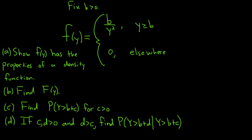In this problem we have a density function f of y and we have to answer various questions. Let's go through them one by one. Part A says to show that f of y has the properties of a density function. Let's go ahead and work through that.